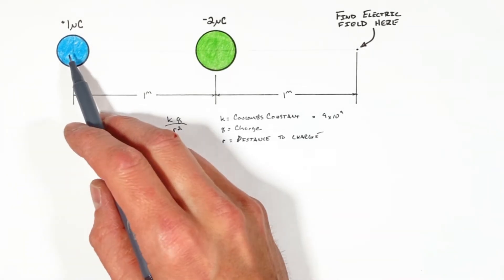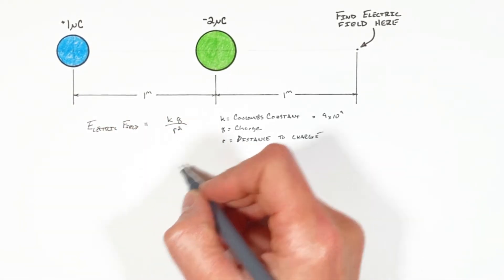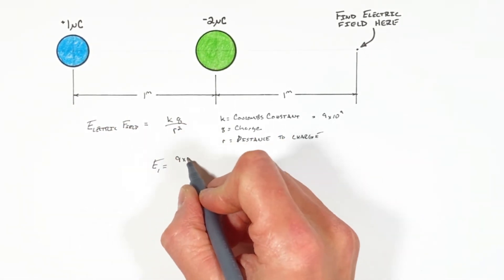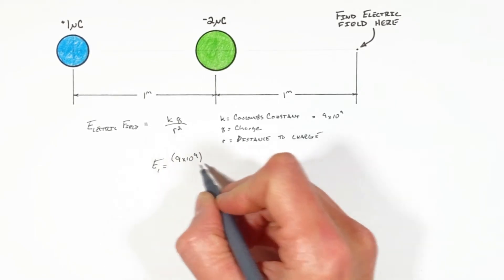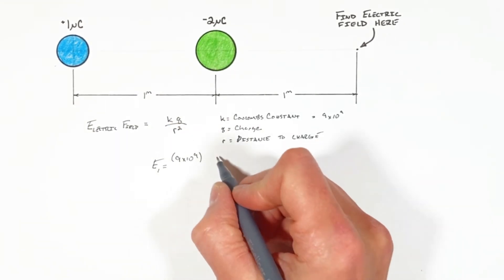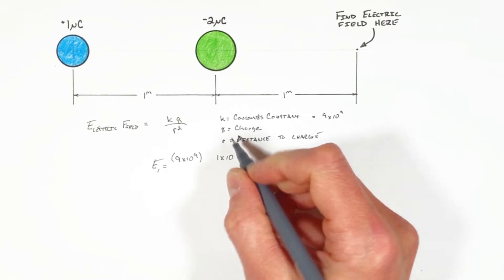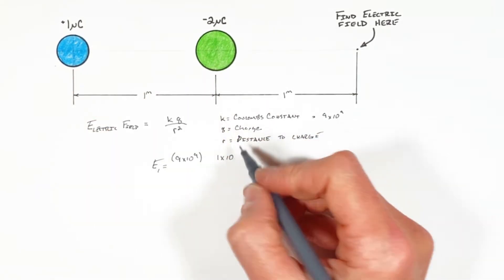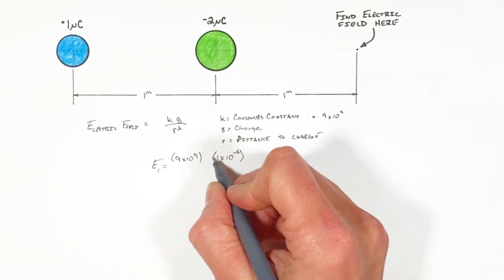So starting with this 1 microcoulomb charge, we've got Coulomb's constant multiplied by this charge, that's 1 times 10 to the micro, that means negative sixth coulombs.